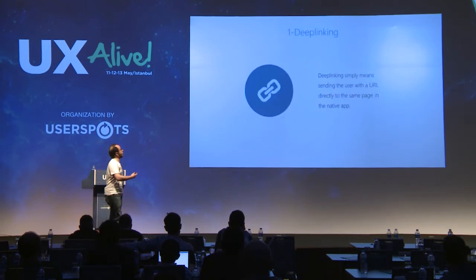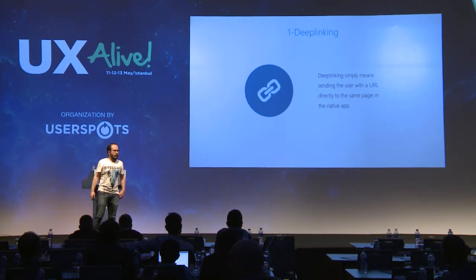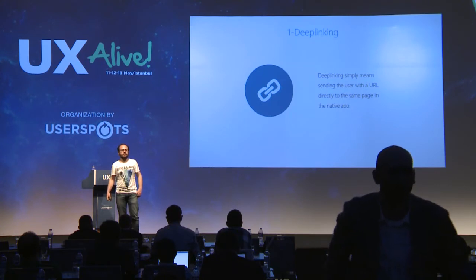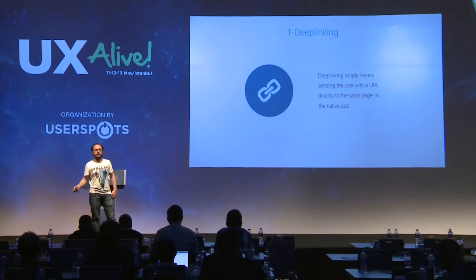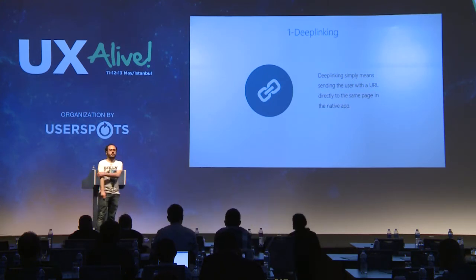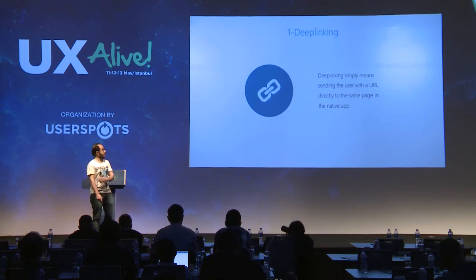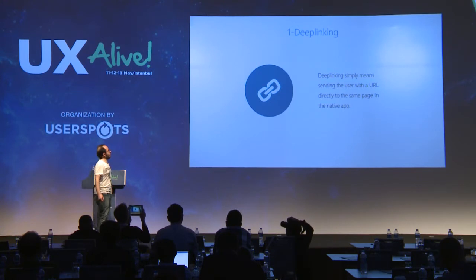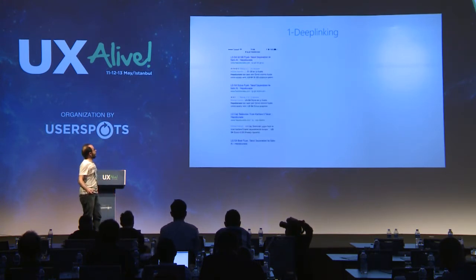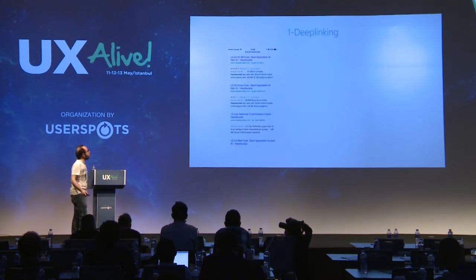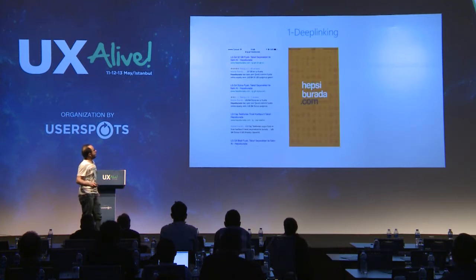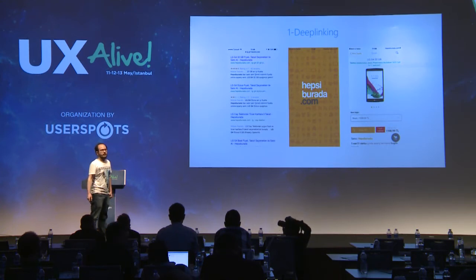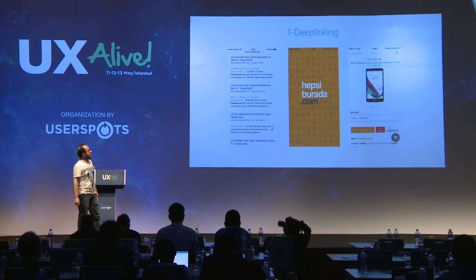The first step to use the power of native apps is deep linking. As you may know, deep linking simply means sending a user with a URL directly to a specific page in a native app. We started implementing deep linking at Hepsiburada last year, and after implementation we saw major increases in app traffic as well as app active users. For example, if I search for LG G4 on Google and click the Hepsiburada result, I see the splash screen of the app and then go directly to the LG G4 page in the native app. This helps us convert better and provide a better experience.